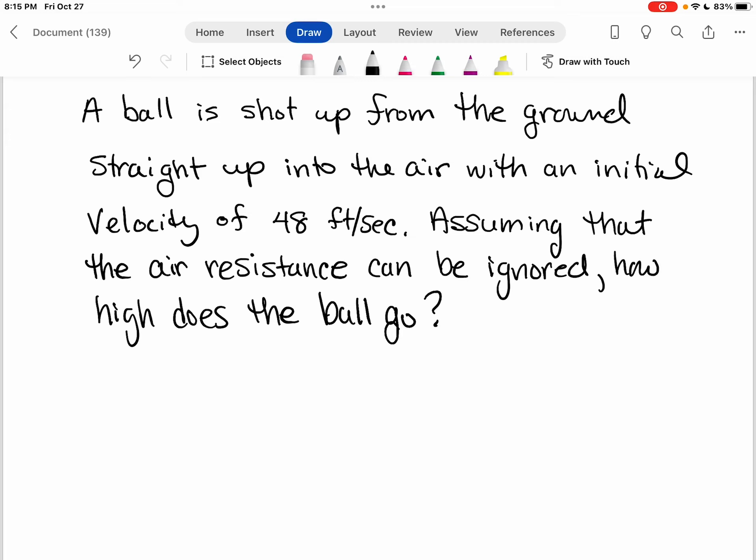A ball is shot up from the ground straight up into the air with an initial velocity of 48 feet per second. Assuming that air resistance can be ignored, how high does the ball go?